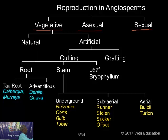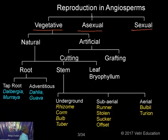Coming back to the natural system of propagation, all organs of the plant — root, stem, and leaf — are involved. We will go organ by organ. First, we take up the root, which is divided into taproot and adventitious root. Examples include Dalbergia, Muraya, Dahlia, and Guava.